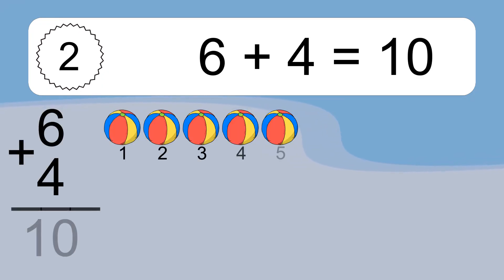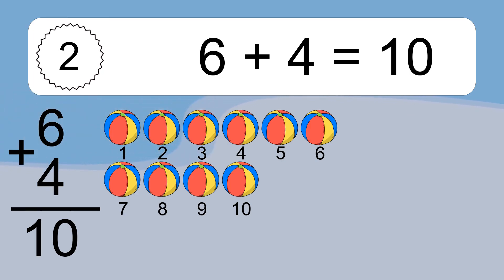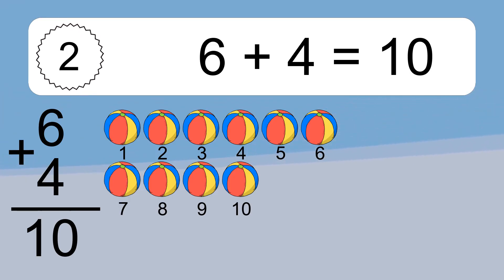6 plus 4 equals what? 6 plus 4 equals 10. Let's count it: 1, 2, 3, 4, 5, 6, 7, 8, 9, 10.